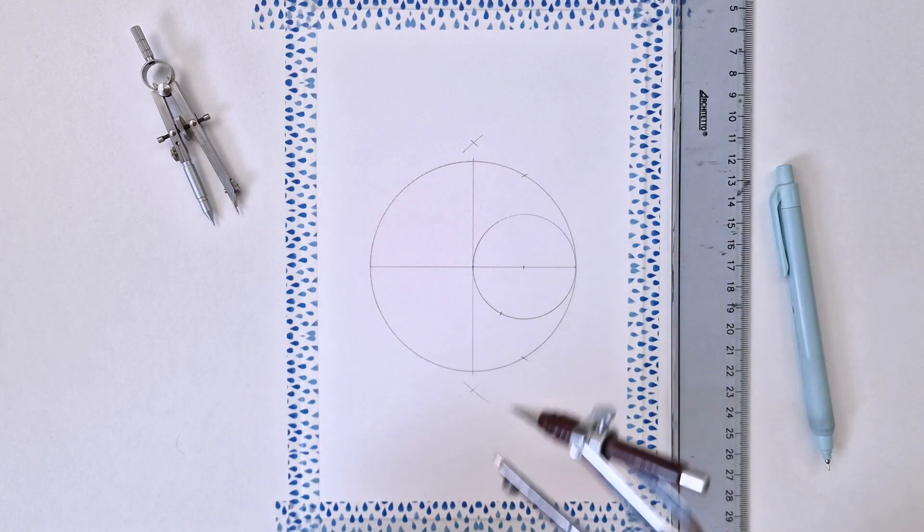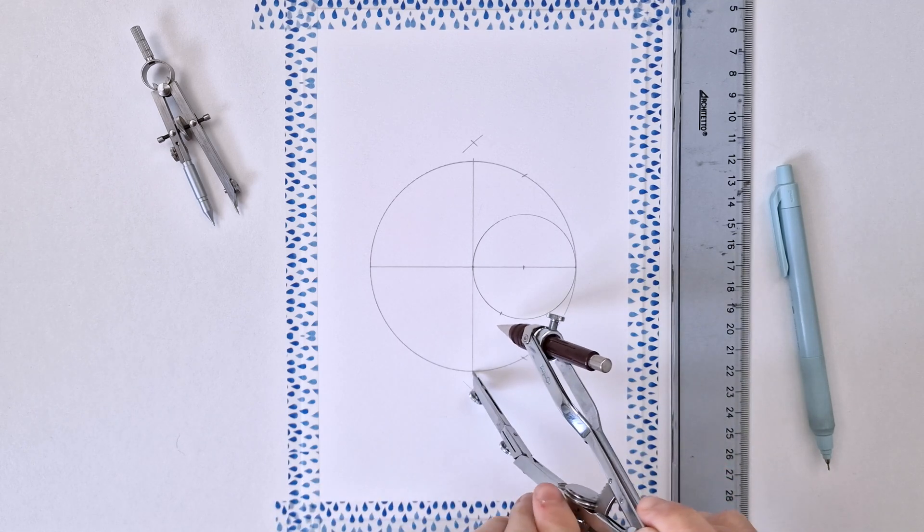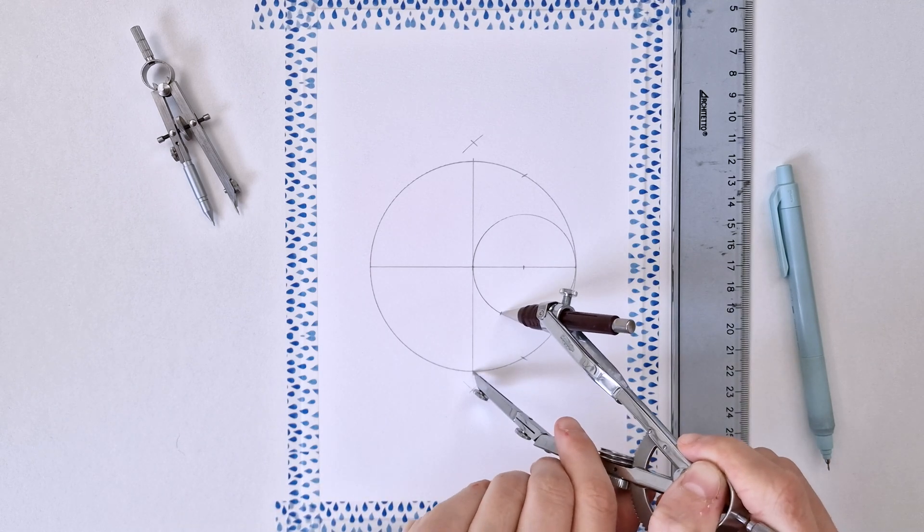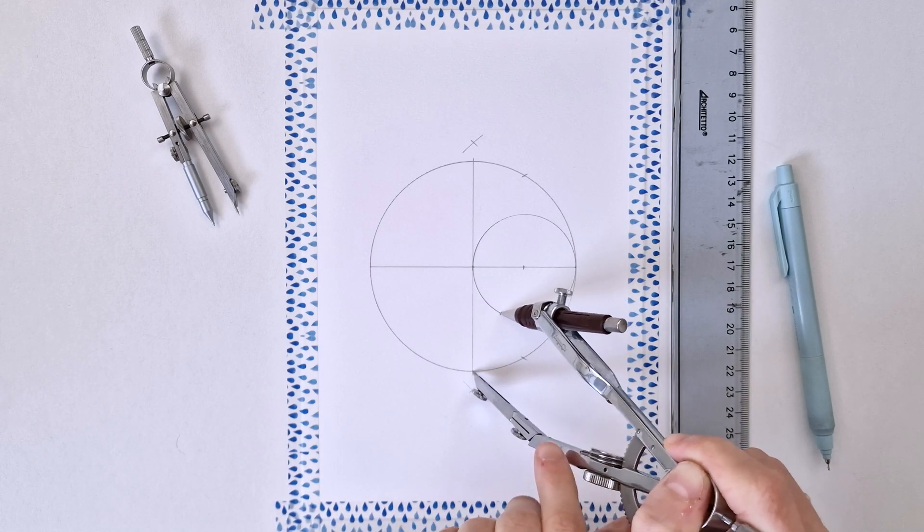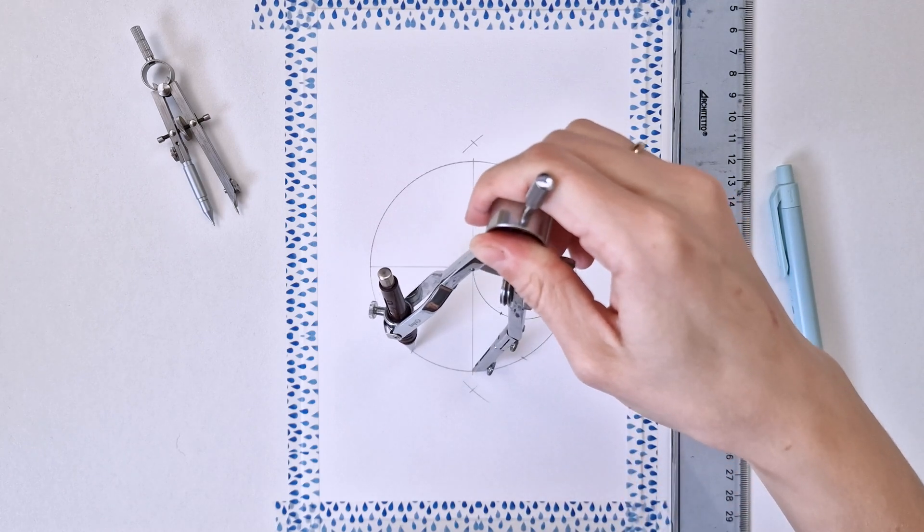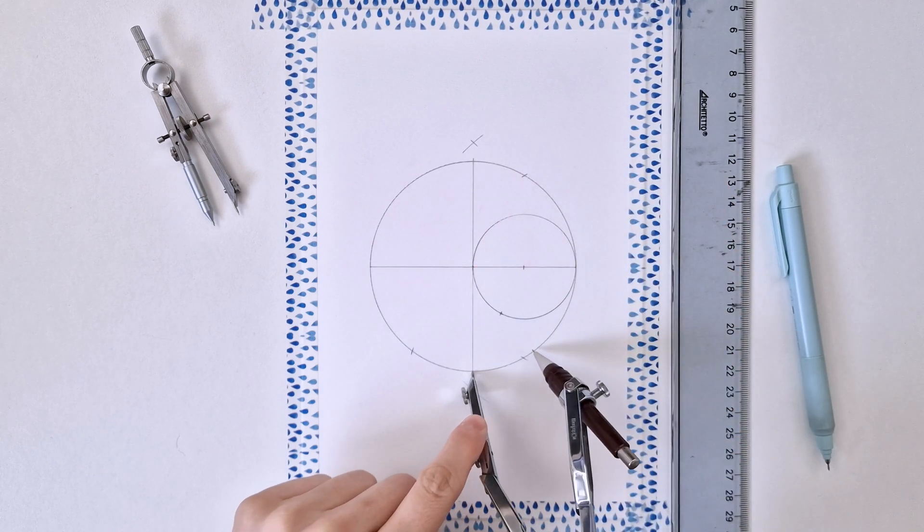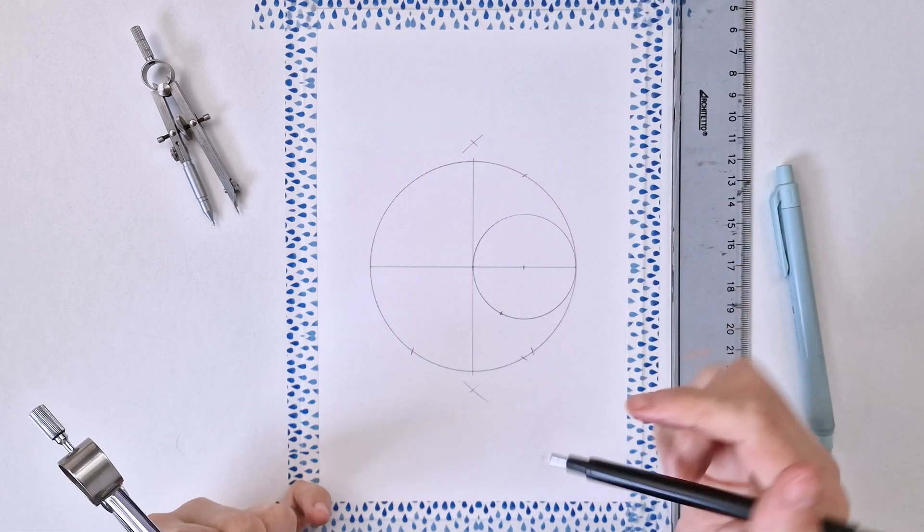Next, I'm pointing my compass down here, open it to this intersection point and I'm just going to make two marks, one on the left and one on the right on the circumference.